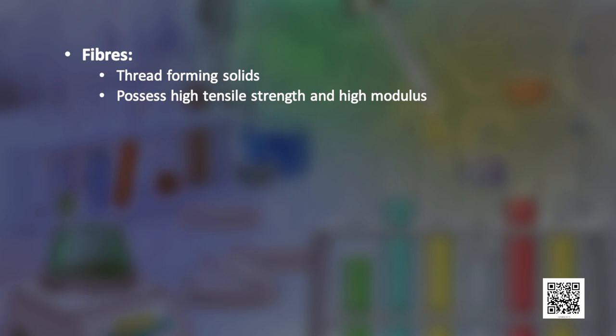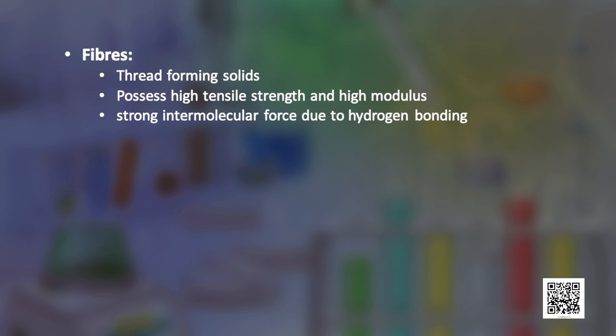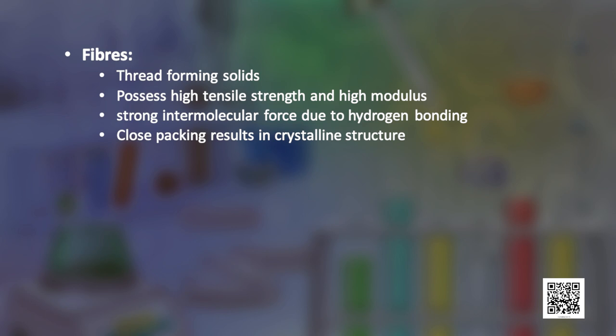The next subcategory is fibers. These are thread-forming solids which possess high tensile strength and high modulus. These characteristics can be attributed to strong intermolecular forces like hydrogen bonding. These forces also lead to close packing of chains and thus impart a crystalline nature. Examples of this category are polyamides such as nylon 6-6 and polyesters such as Terylene. Note that some polymers can fall into different categories, which you can explore as part of an assignment.